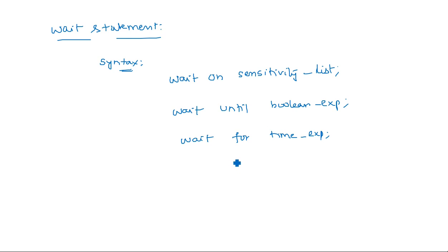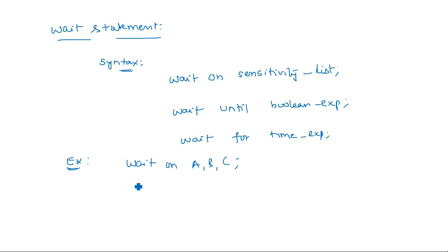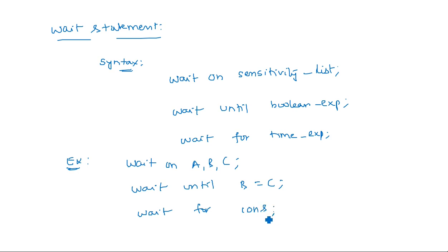Examples of the wait statement: 'wait on a, b, c' — waits on input sensitivity list; 'wait until a = b' — the boolean expression is a condition like a equal to b; 'wait for 10 nanoseconds' — a time delay. Another example: wait until b = c means the process repeatedly executes until this condition is true. Wait for 10 nanoseconds or 5 nanoseconds means the signal holds its execution for that duration.